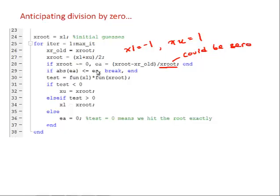And so the way that I've implemented that is by saying we are only going to calculate EA here if xroot is not equal to zero. So if xroot is not equal to zero, then we calculate EA and continue with the bisection as usual.